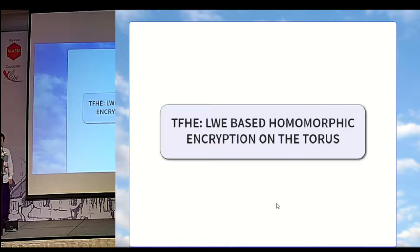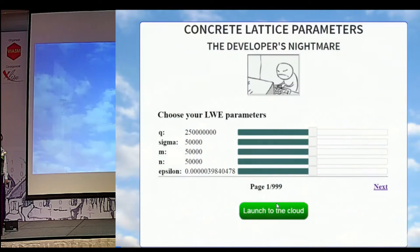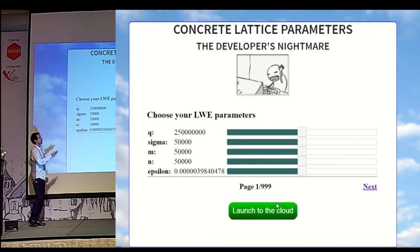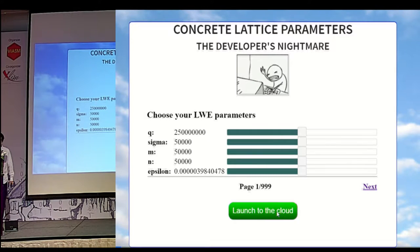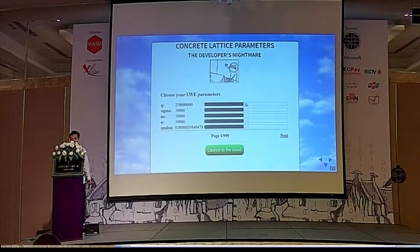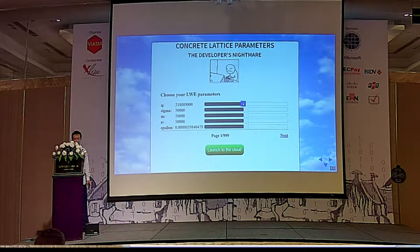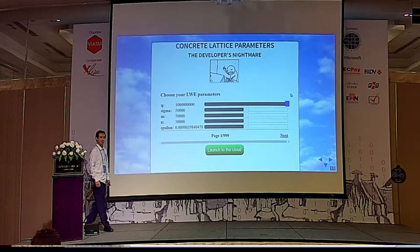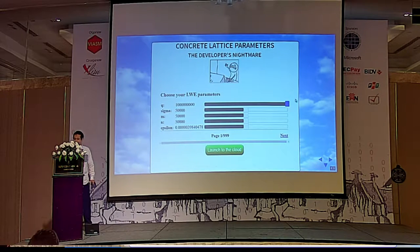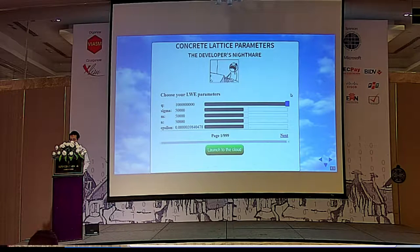We'll now review our core cryptosystem, which is based on learning with errors. We'll start with something that has become the most famous lattice problem today: finding concrete lattice parameters. If you consider the parameter Q, which is one of the most important parameters in learning with errors, you will know that if Q is too small, your cryptosystem is broken, but if Q is too large, your cryptosystem is also broken. That's a sign that the parameters are not monotonically correlated with the actual security of the system.